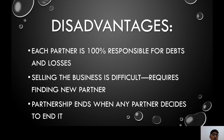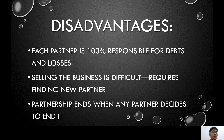The disadvantages of partnership: each partner is 100 percent responsible for debts and losses. Selling the business is difficult because it requires finding new partners. For example, if three partners open a business and one partner decides to leave — say, to migrate to the United States — the remaining two cannot simply continue the original three-person partnership. The original partnership must be terminated, and a new partnership formed between the remaining two. Additionally, a partnership ends when any partner decides to end it.